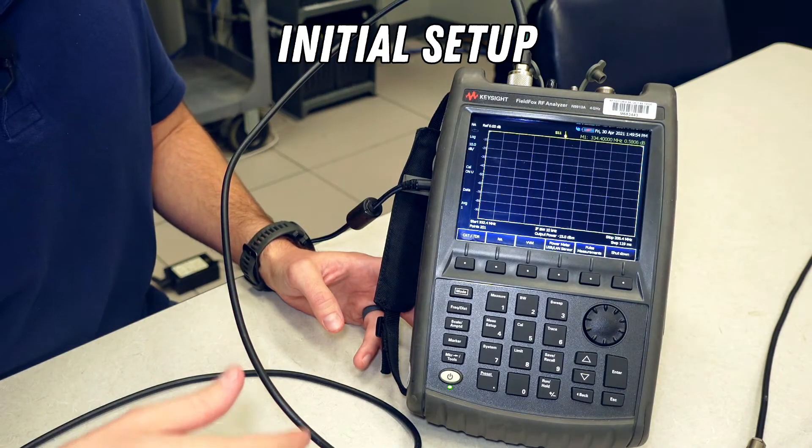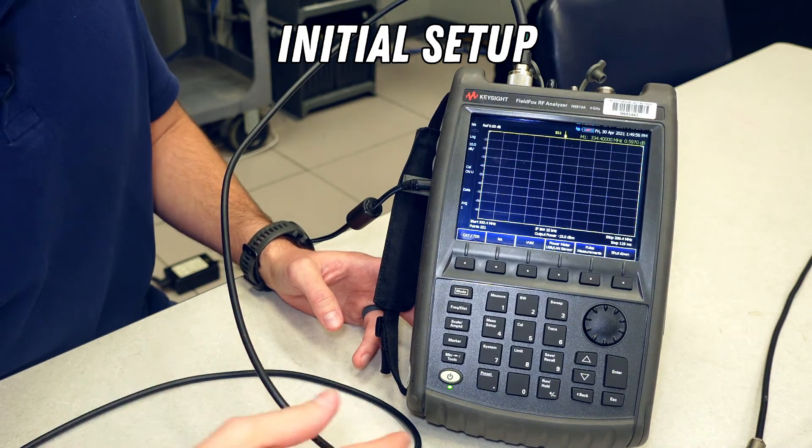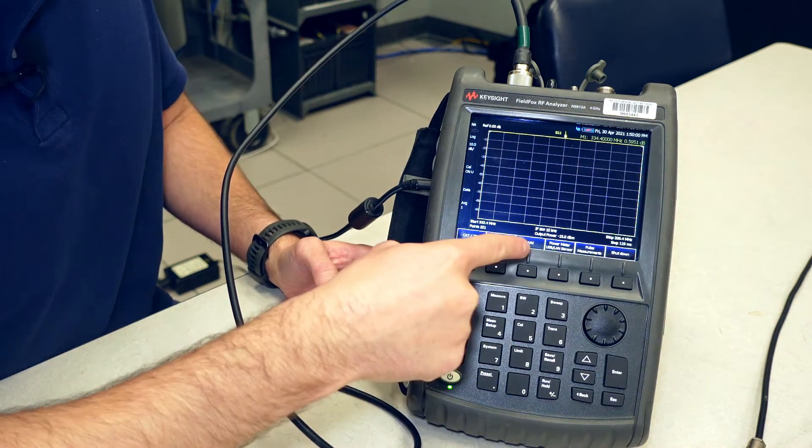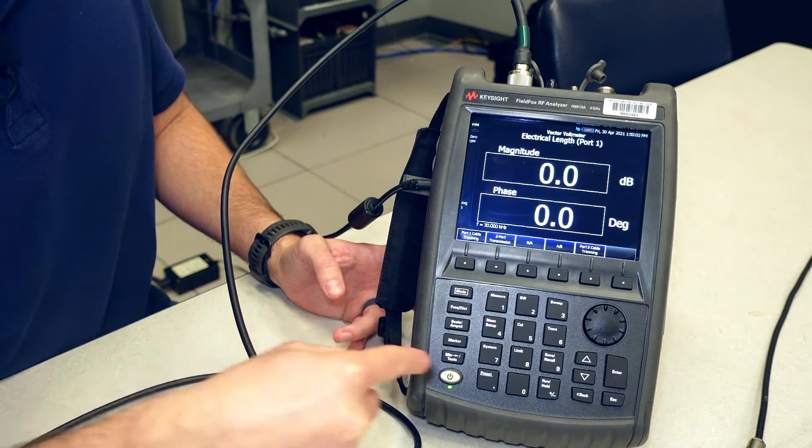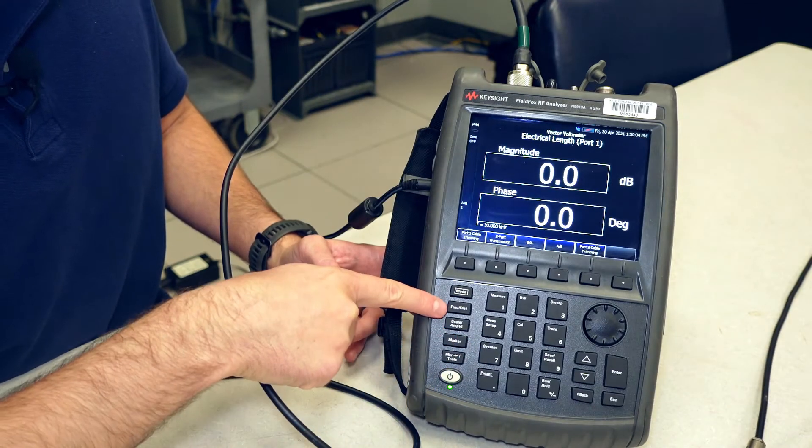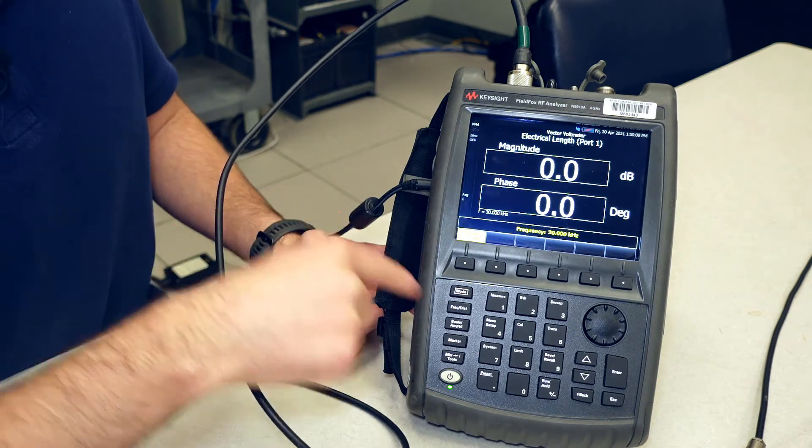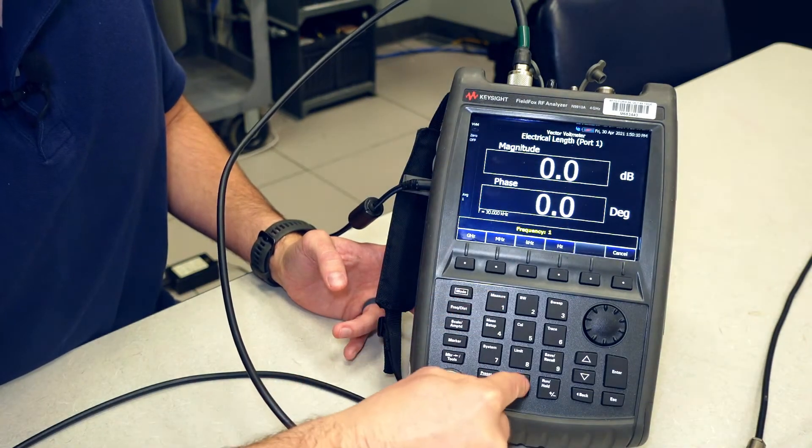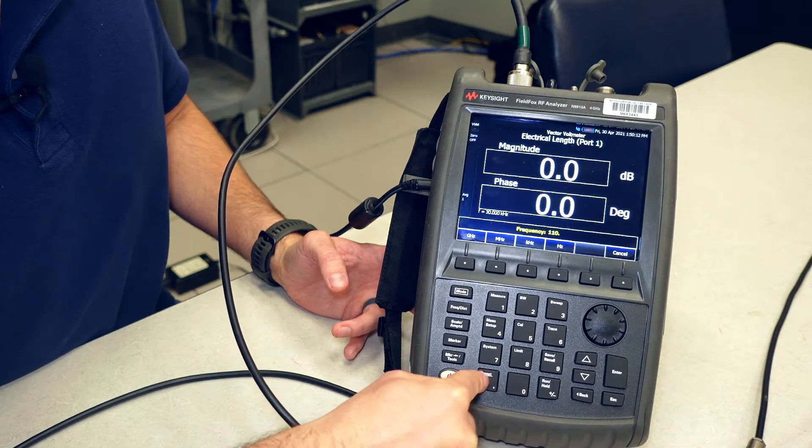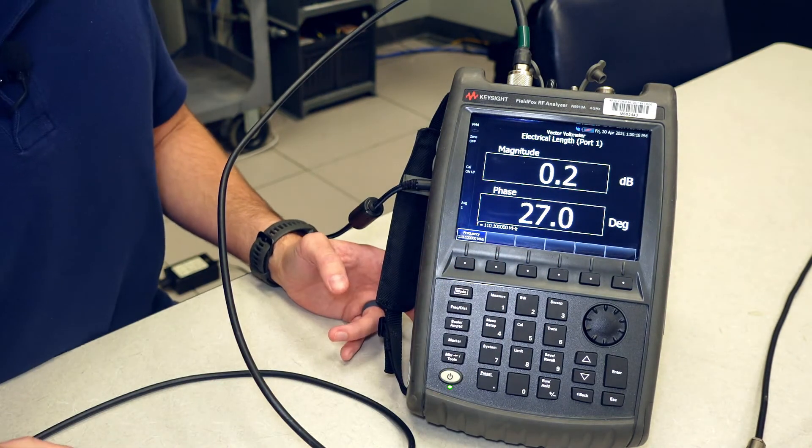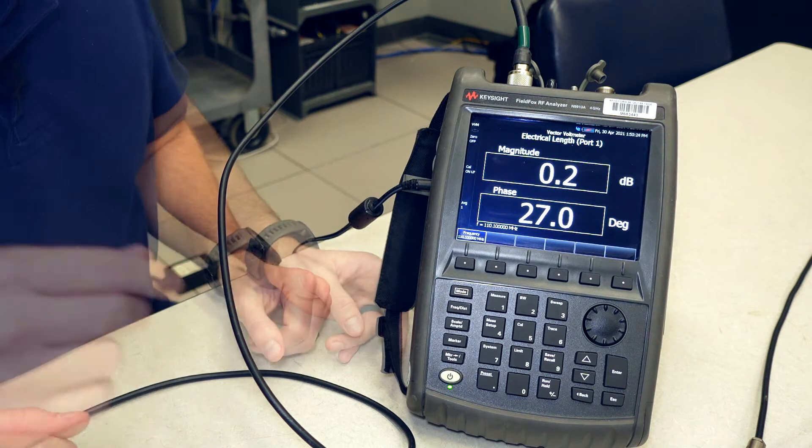Okay, by default most FieldFoxes come up in the network analyzer mode. Of course you can change that in the system configurations, but we're going to hit the mode key and we're going to hit vector voltmeter. The first thing we want to change is the frequency. We hit the frequency key and for this example we're going to use 110.1 megahertz, standard localizer frequency or one of them.